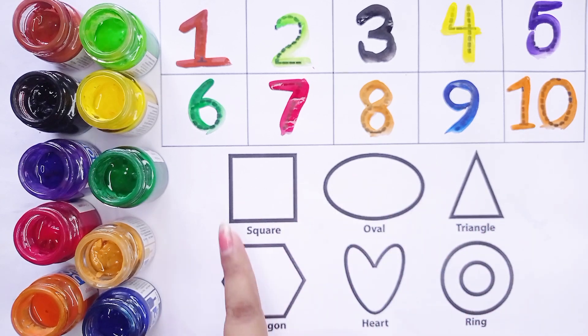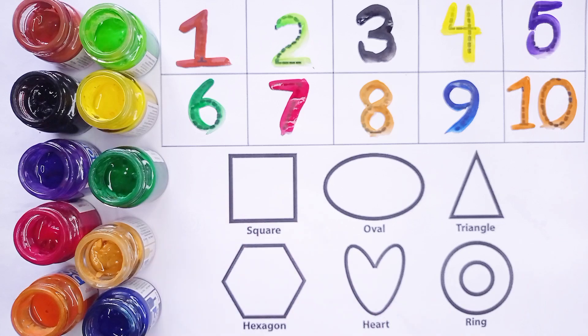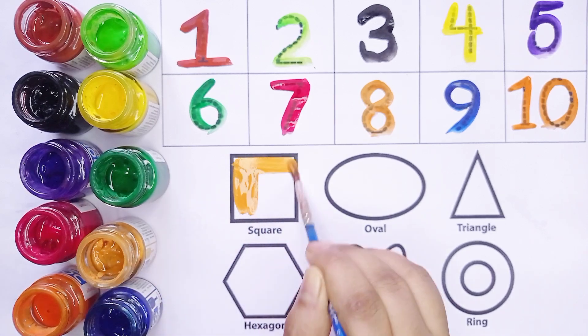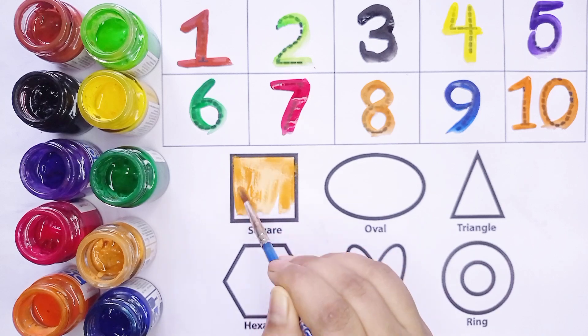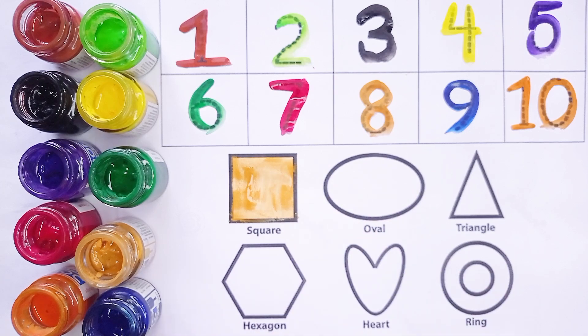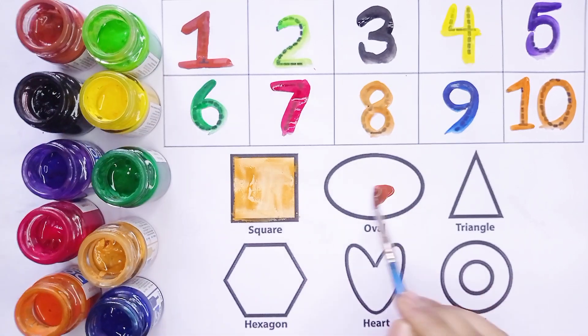Yeh hai shapes. Aur yeh hai square. Yellow color. Konsa color? Yellow. Iske baad oval shape. Konsa shape hai yeh? Oval.